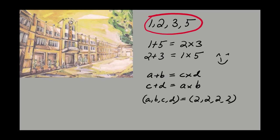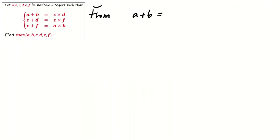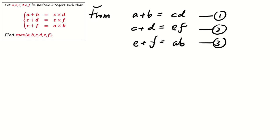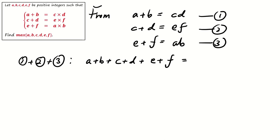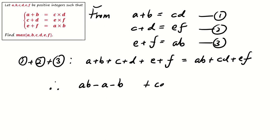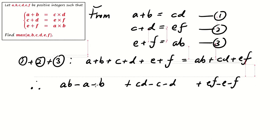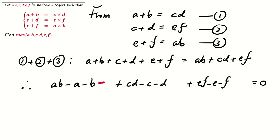This is the beginning of today's question. From the conditions we have, we label them as equations 1, 2, and 3. Taking the sum of these three equations, on the left-hand side we have a plus b plus c plus d plus e plus f, and on the right-hand side we have ab plus cd plus ef. We can rewrite this as ab minus a minus b plus cd minus c minus d plus ef minus e minus f equals 0.